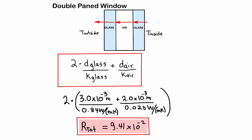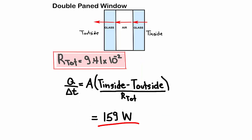Now when we go back to our heat conduction formula, we can plug the values in and get this. Notice that this is significantly less than what we got for the single pane window.